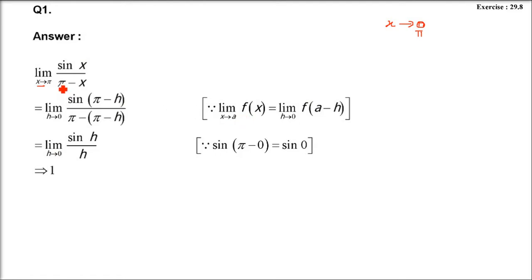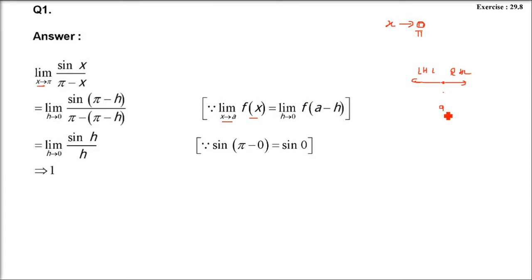Whenever required, I will tell you the limits. Here, π minus x is there. When x tends to a and we want to convert it into h tends to 0: if this is the point of discussion, that is x tends to a — this is point a — we discuss the left-hand limit and right-hand limit and try to find out. We can take either. Since a is our point, we have a plus (right hand) and a minus (left hand). When both left and right exist, we say the limit exists.